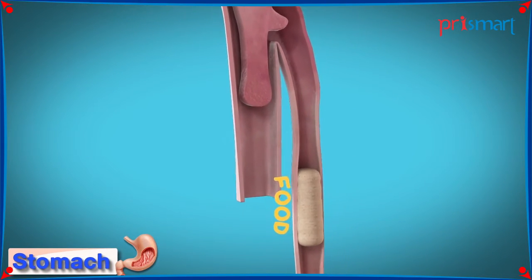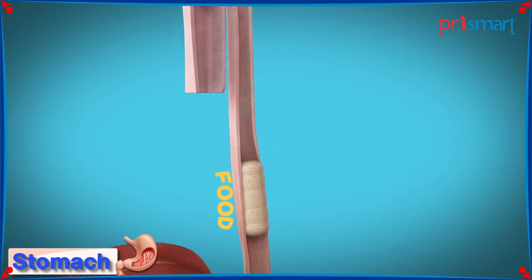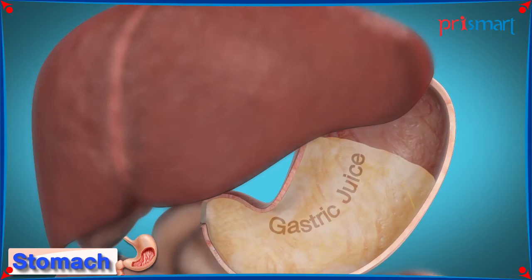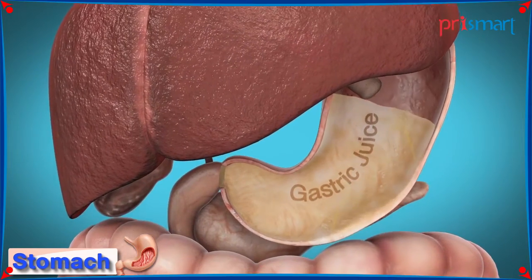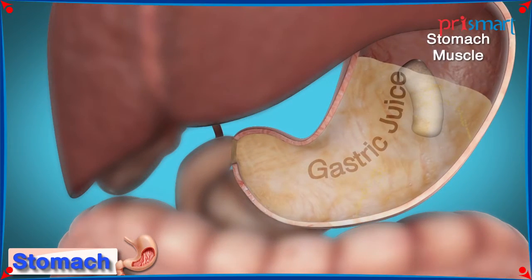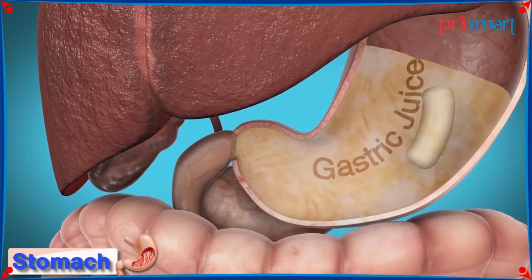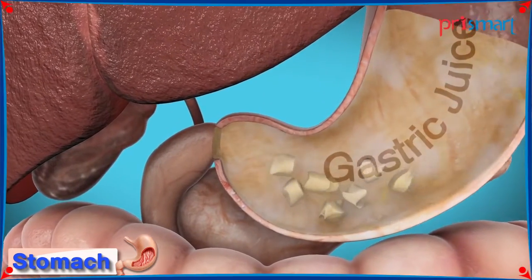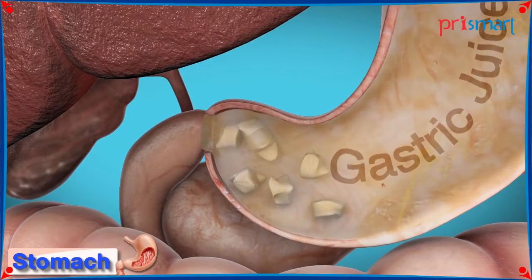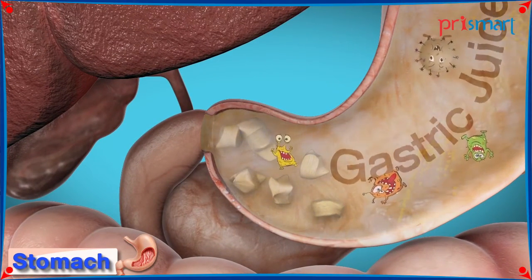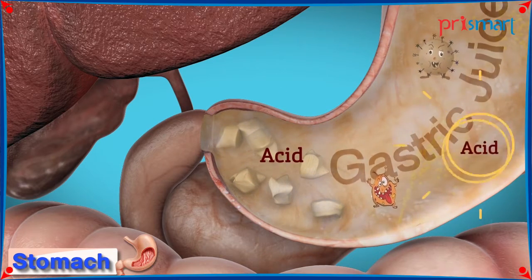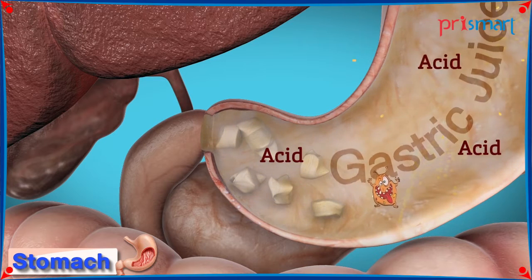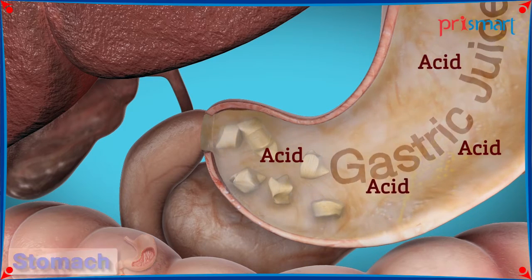Stomach. Through the food pipe, the chewed food reaches the stomach. The stomach looks like a large pack. Here, the food is churned by the stomach muscles and in the process, it mixes with the digestive juices of the stomach called gastric juice. In the stomach, the food gets partly digested. The gastric juice contains an acid that kills the germs and digests the protein part of the food.